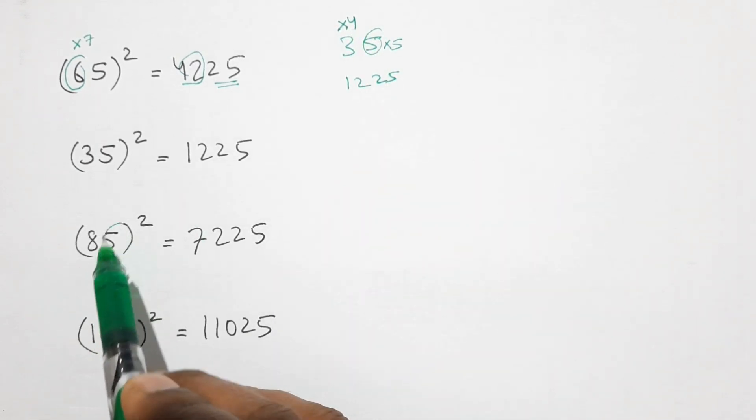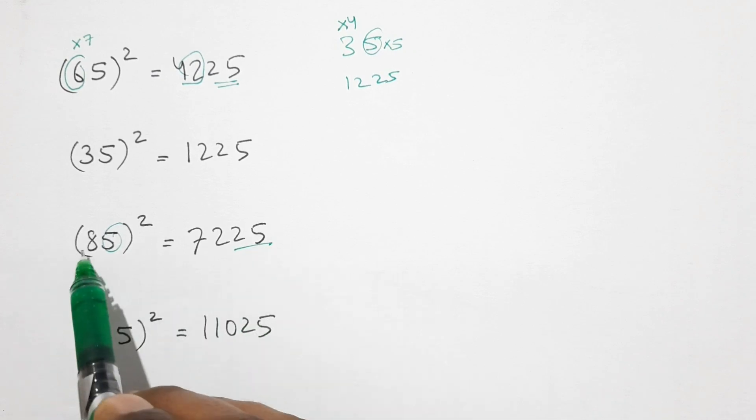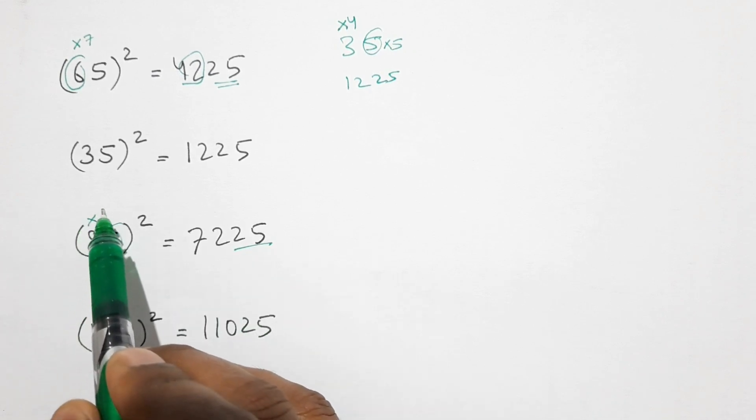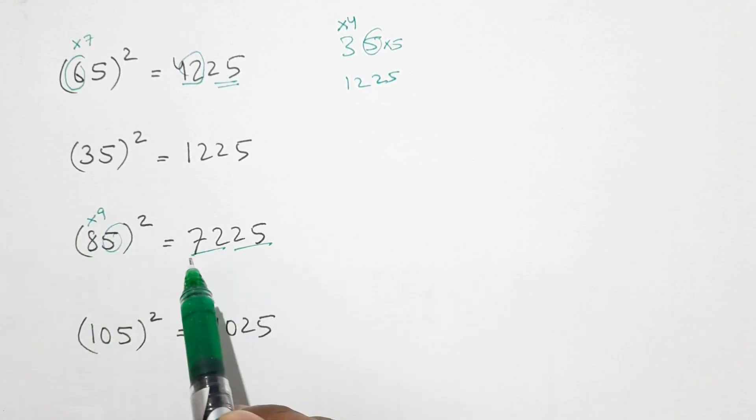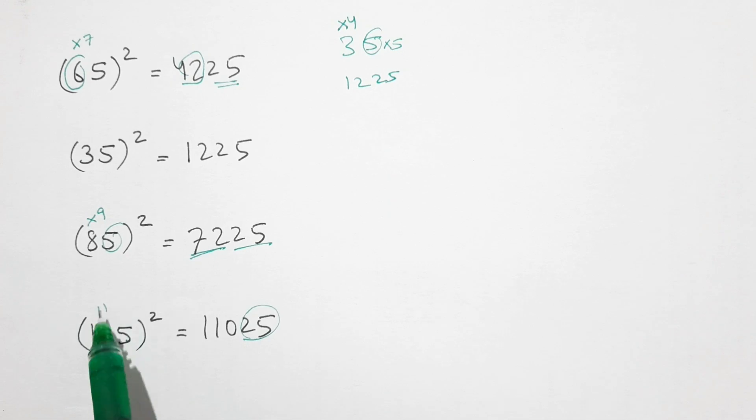Similarly here also 5 square is 25 and 8 into 1 more than 8 is 9, 8 times 9 is 72. Here also 5 square is 25 and 10, 1 more than 10 is 11, so 10 into 11 is 110.